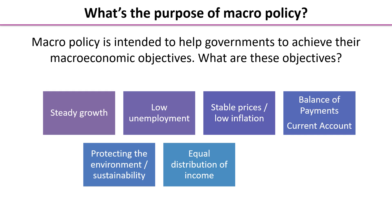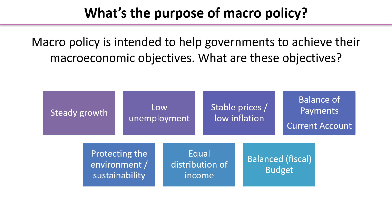An equal distribution of income — note it's income and not wealth at this stage, so we're just looking for an equal distribution of income. And a balanced fiscal budget: this is the government's budget over one financial year, looking for a balance between government revenue and government spending.